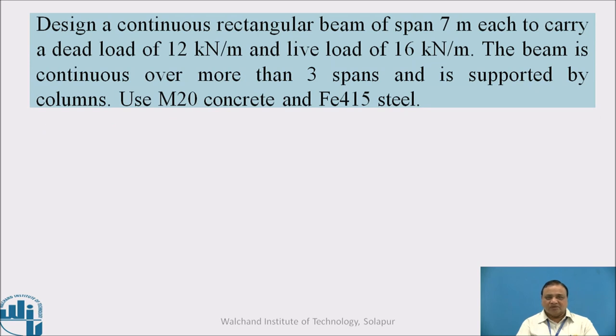This is the example: Design a continuous rectangular beam of span 7 meter each to carry a dead load of 12 kilonewton per meter and a live load of 16 kilonewton per meter. The beam is continuous over more than three spans and is supported by columns. Use M20 concrete and Fe415 steel.